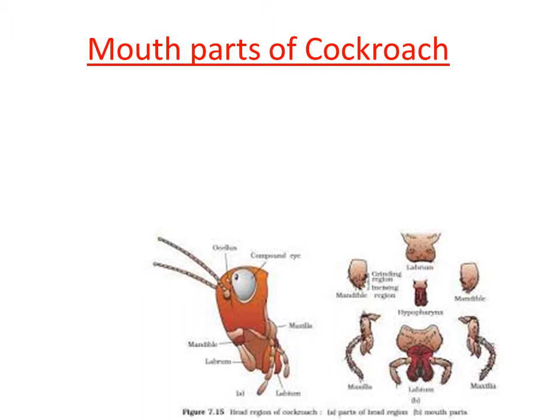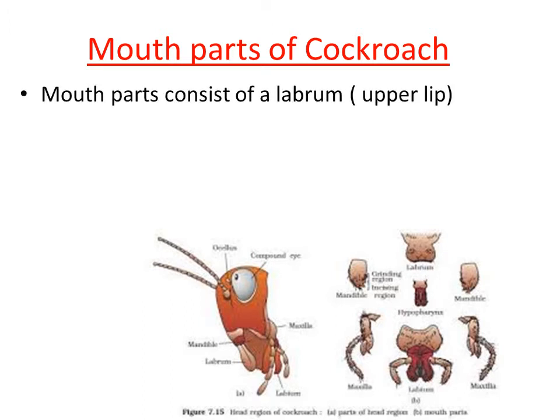The mouth part is located in the region of the head. In the head region, a pair of compound eyes are present and a pair of antennae are present, and also we can see the mouth part. The mouth part in the cockroach is made out of a number of segments, each performing their own function. The main function of the mouth part is biting and chewing of the food.